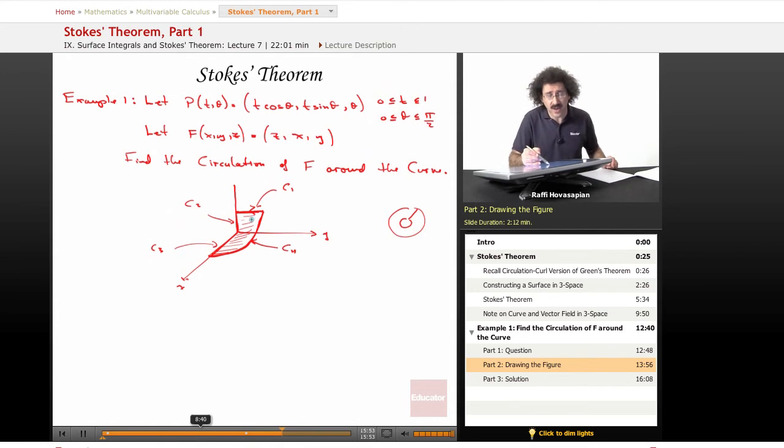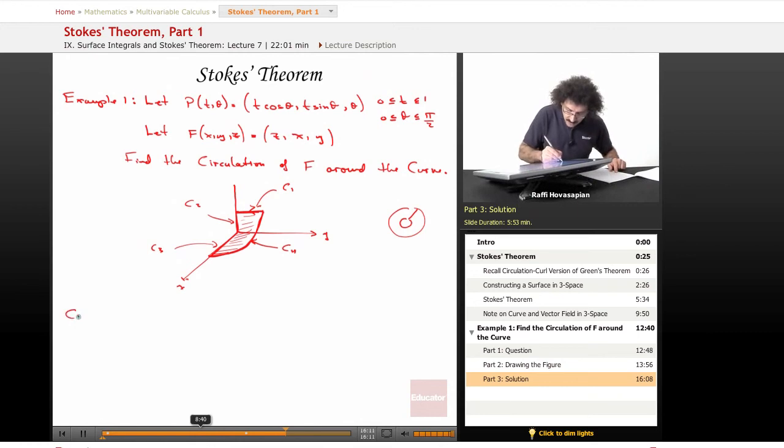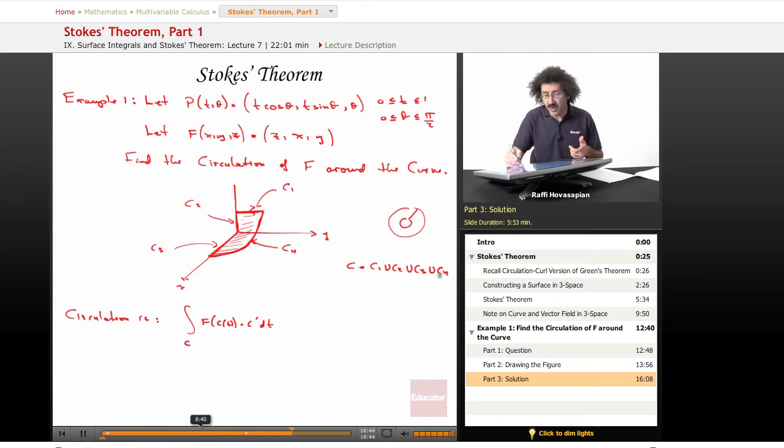I can parameterize these things if I need to, but I don't need to because I have Stokes' theorem at my disposal. The surface is easily parameterized—they gave us the parameterization. So we definitely want to use Stokes' theorem. The circulation is the integral over C of F(C(t)) · C'(t) dt, where C = C1 ∪ C2 ∪ C3 ∪ C4.